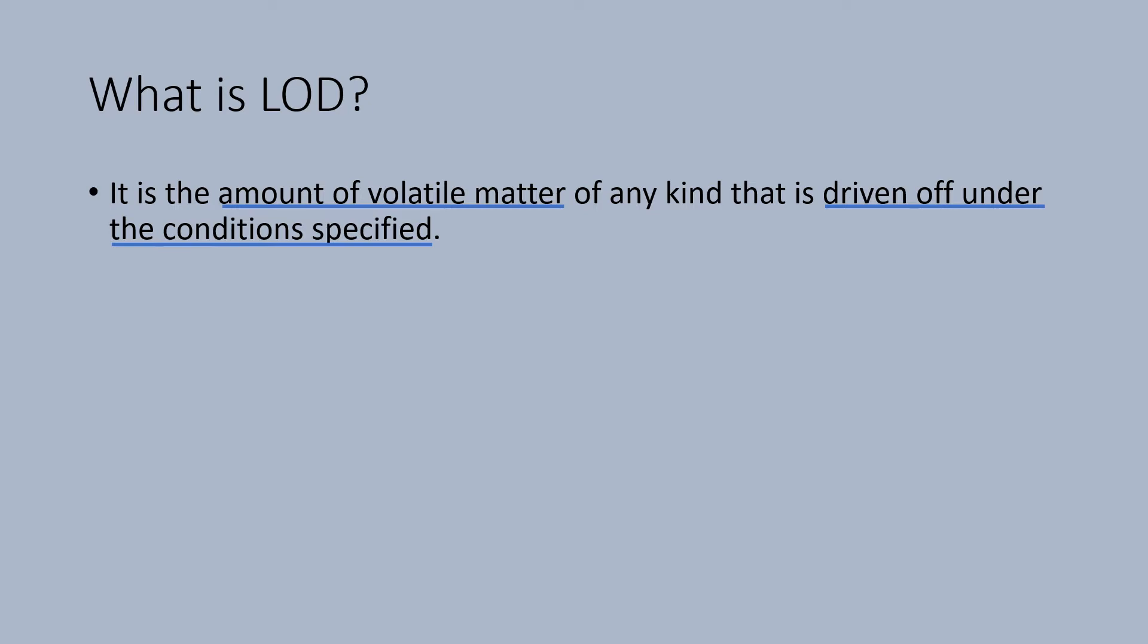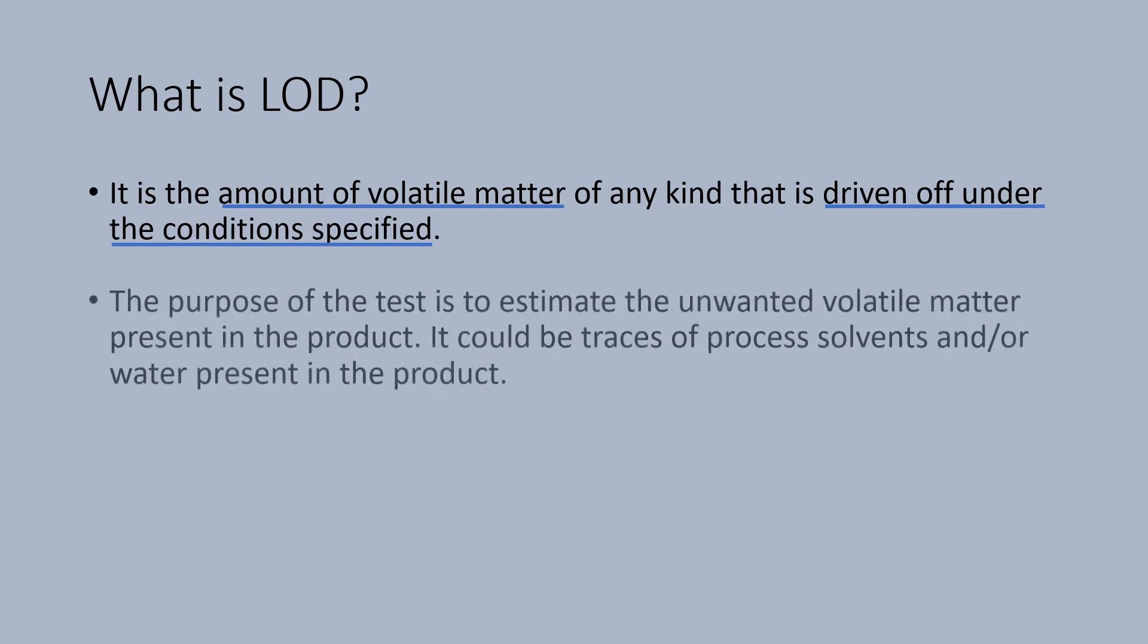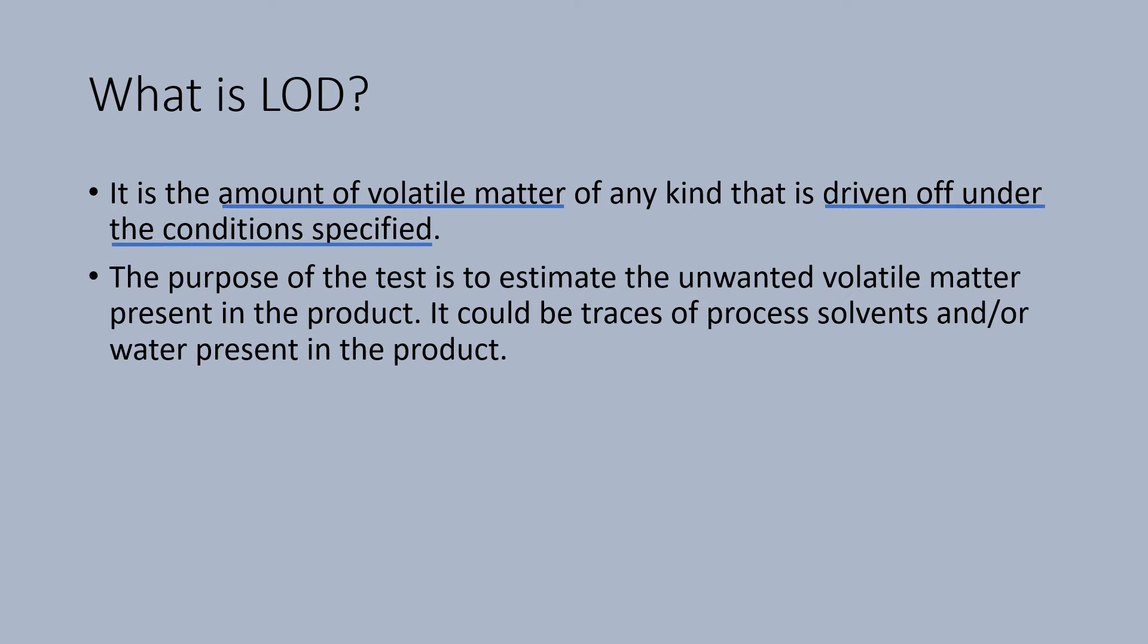Generally, it will be very low. After isolation of the product in the final stage, some amount of residual solvents of the process may be retained in the product. The purpose of this test is to estimate the unwanted volatile matter present in the product. It could be traces of process solvents and or water present in the product. The process solvents could be any organic solvent or even water.